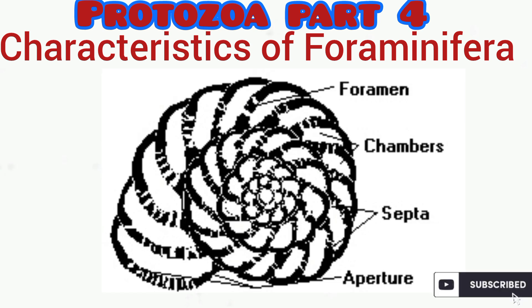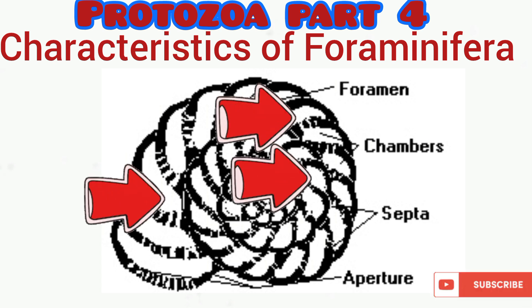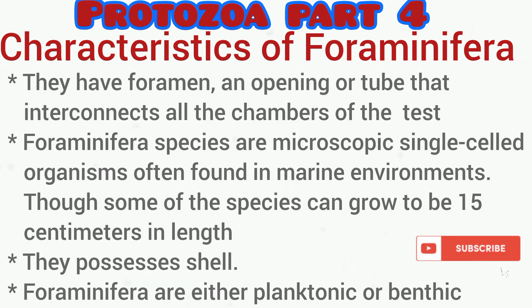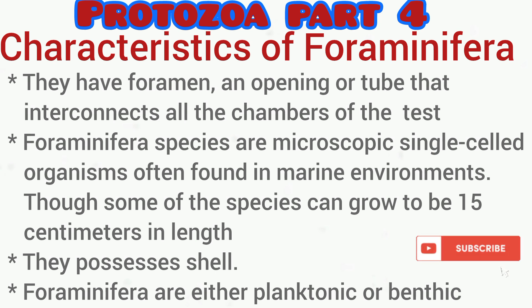They are mostly marine animals. Some species can actually possess one chamber, called unilocular, while others can possess numerous chambers, called multilocular. They are microscopic single-celled organisms found in the marine environment and they possess a shell. Some are planktonic, meaning they float with the water current and cannot swim actively against it, while some are benthic, living at the bottom of the ocean or sea floor.